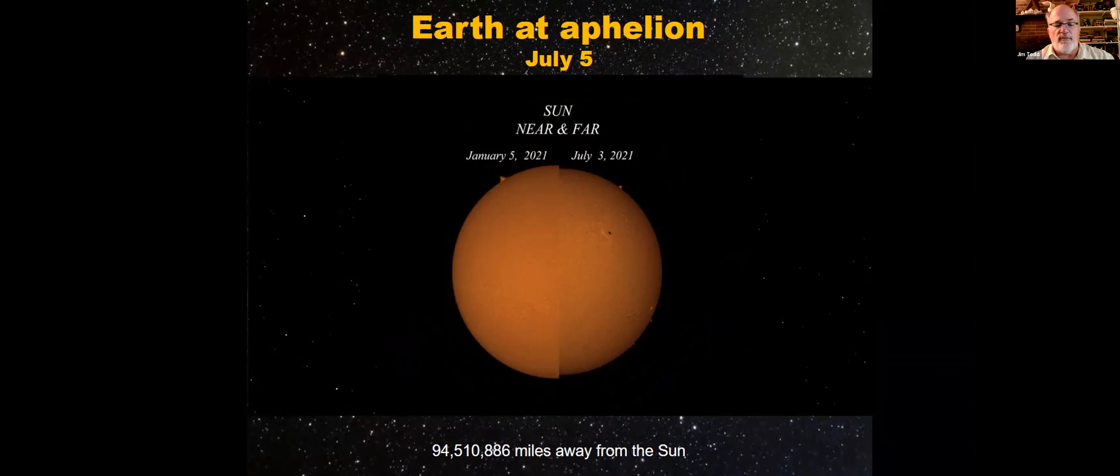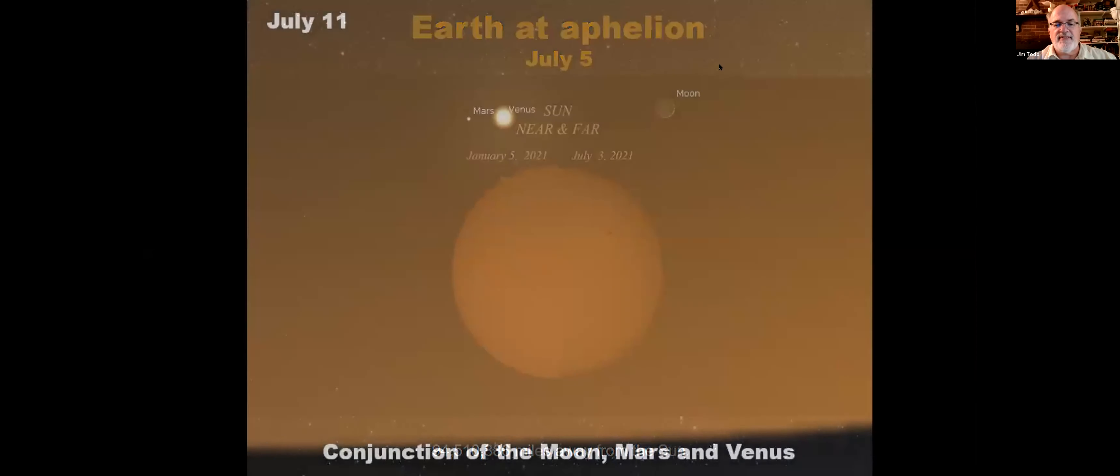On July 3rd, at aphelion the sun is at its furthest distance, about roughly 94.5 million miles. Then perihelion is at its closest in January. Often when we have kids in the planetarium, they think it's warm because the sun is closer. I can see why they would think that, especially for the past month that we've had this heat wave thinking wow the sun is really close. Not exactly.